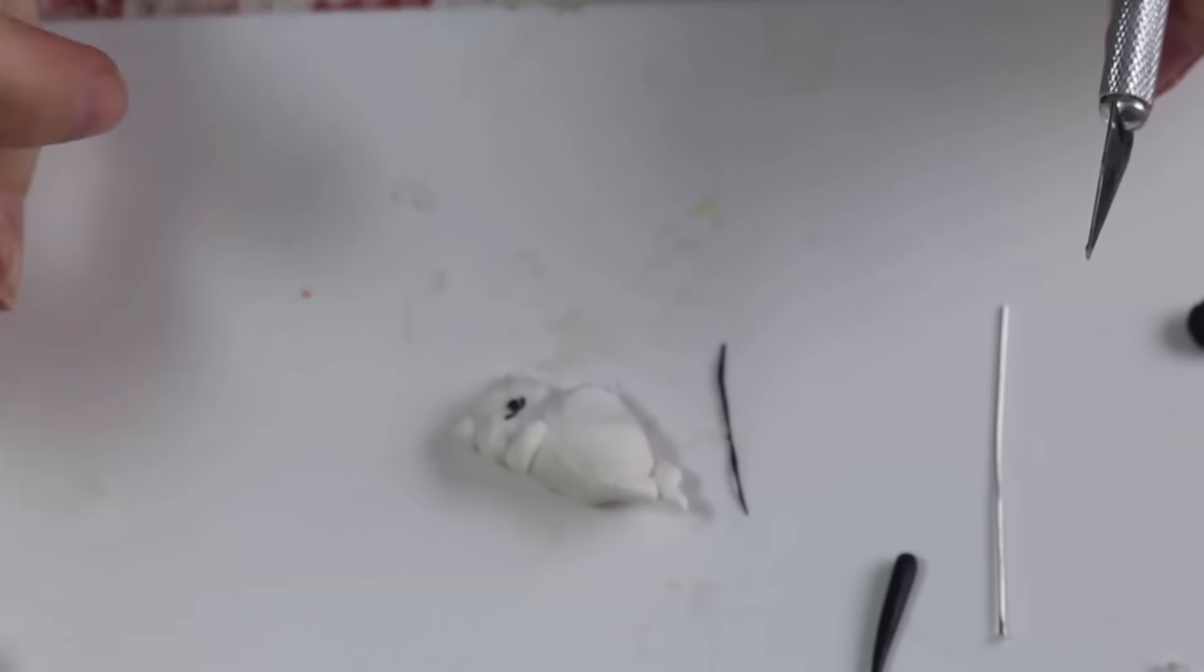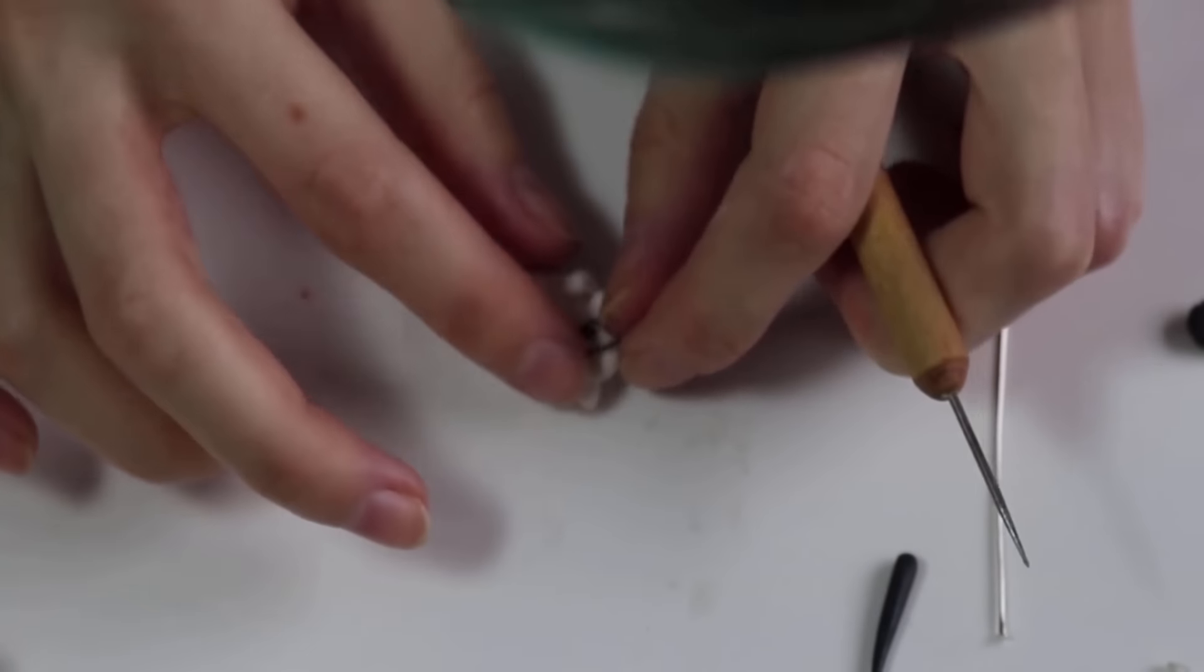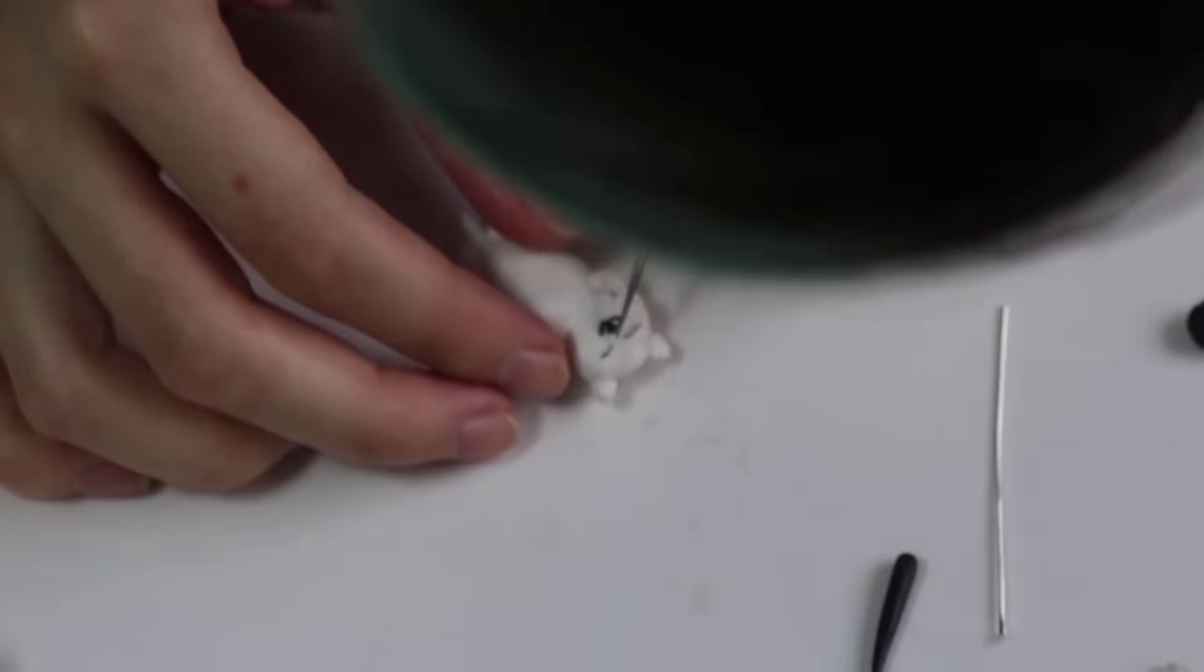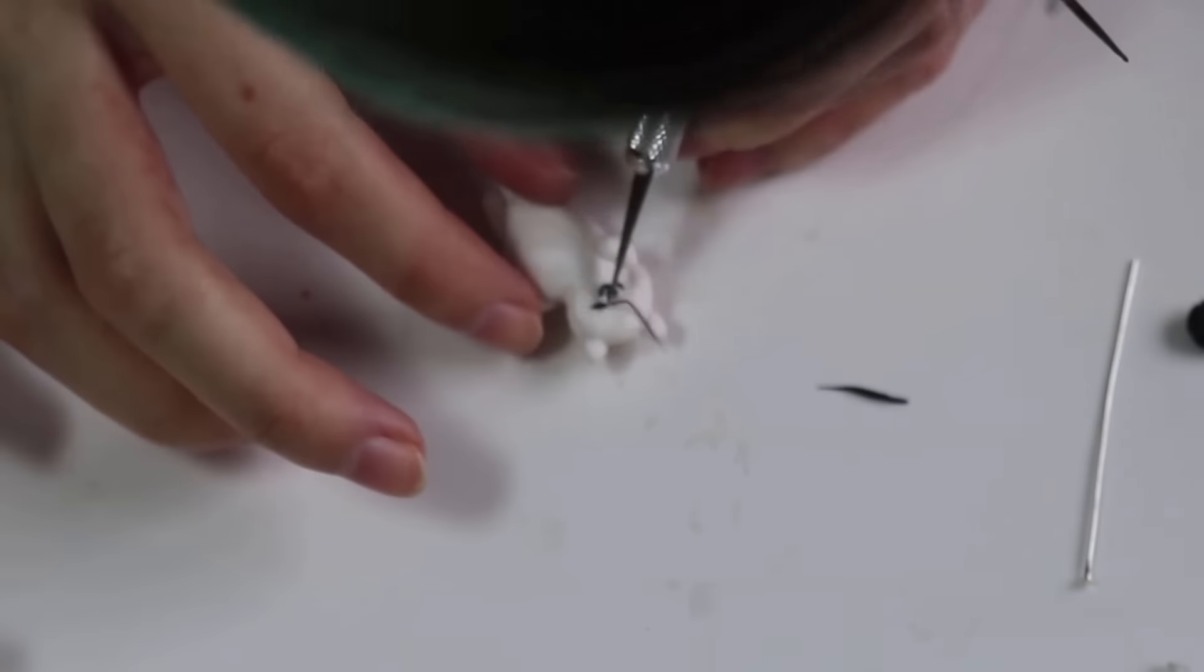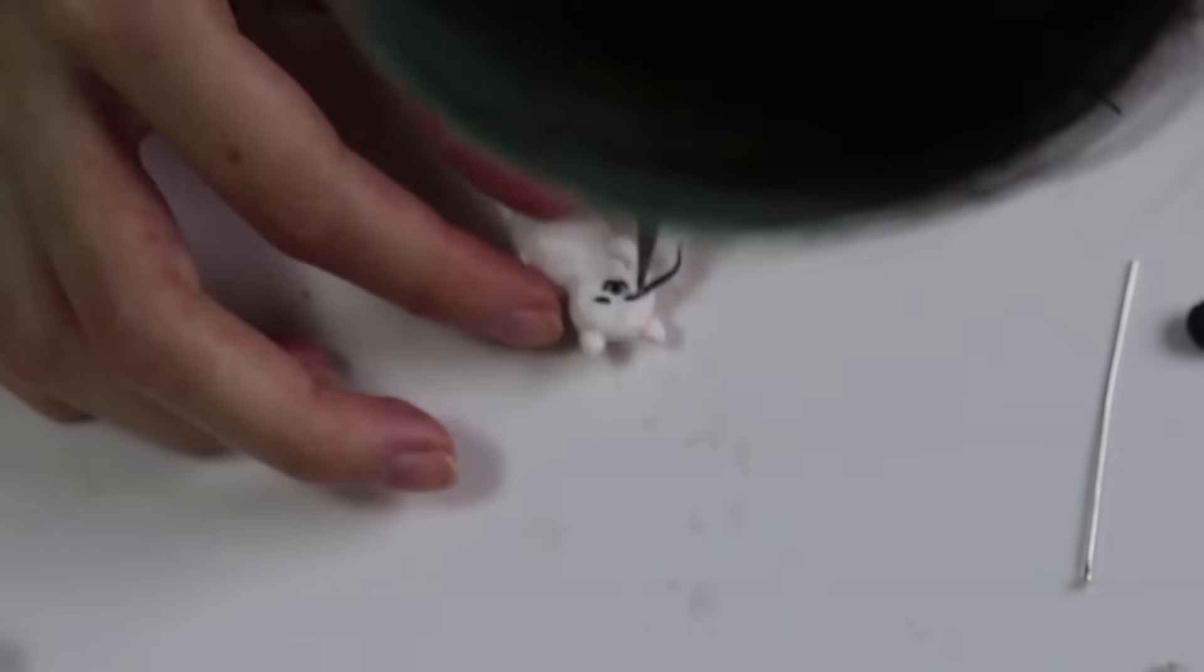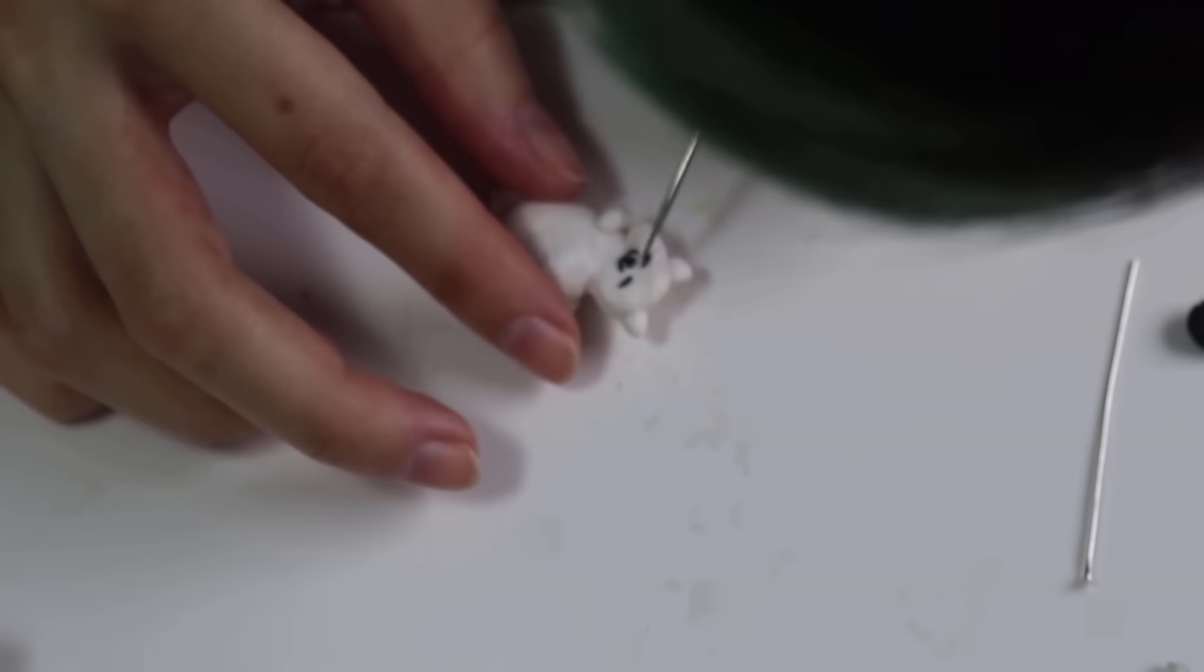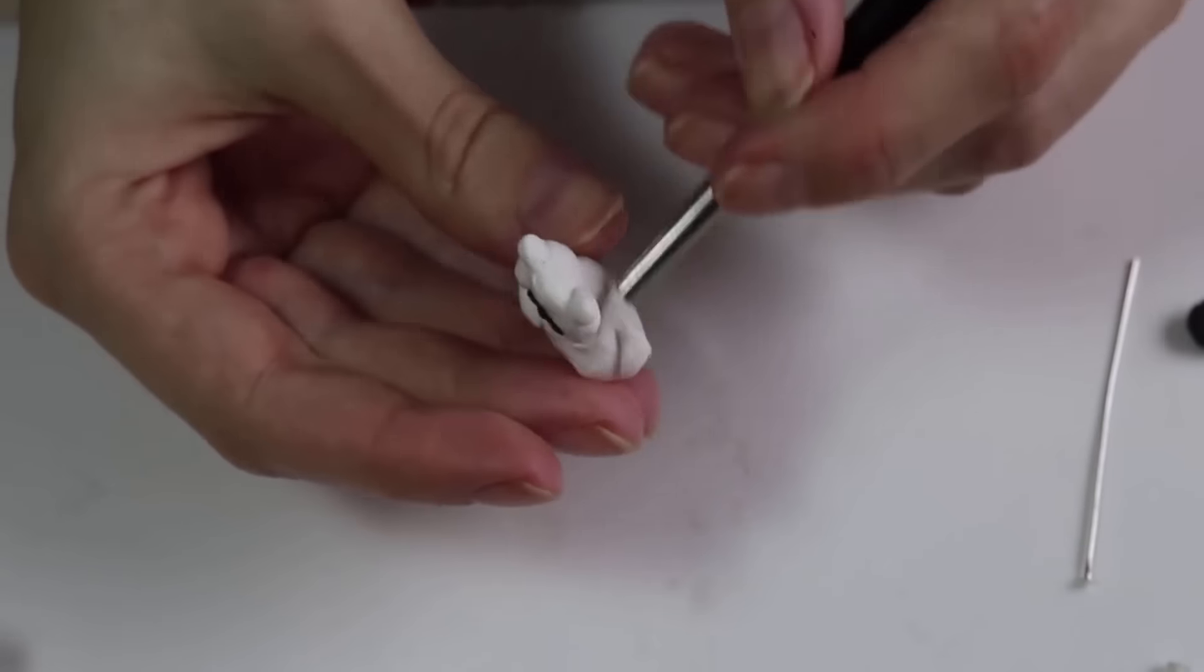And then just two little half circles for his mouth. And then I rolled out an even thinner snake for his eyes. And just be really patient, because it can be a little bit tricky once you get them to a super small size there.